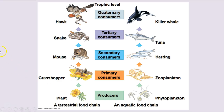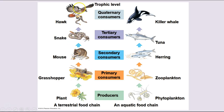Here we have two food chains. On the left we have a terrestrial food chain, and on the right, an aquatic food chain. We see the producer level at the bottom — the plant on the terrestrial side. The primary consumer is the grasshopper eating the flower. The secondary consumer is the mouse eating the grasshopper. The tertiary is the snake eating the mouse, and the quaternary is the hawk eating the snake. If the hawk were eating the mouse, that would make the hawk a tertiary consumer rather than a quaternary consumer.